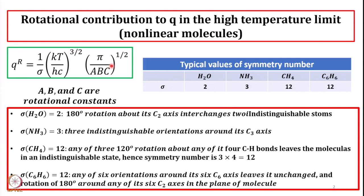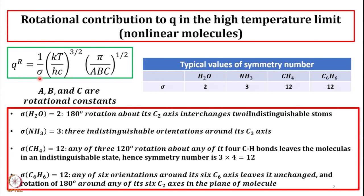Let us revisit that symmetry number is very important because symmetry number comes in the denominator and reduces the value of QR. Let us now consider this numerical problem. The NOF molecule is an asymmetric rotor. You can take a look at the molecular structure of NOF — it is asymmetric, one side is oxygen, other side is fluorine. With rotational constants 3.1752 cm⁻¹, 0.3951 cm⁻¹, and 0.3505 cm⁻¹ — these are A, B and C. We are asked to calculate the rotational partition function of the molecule at 100 degrees Celsius.